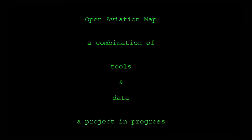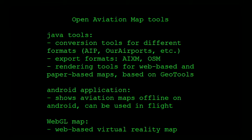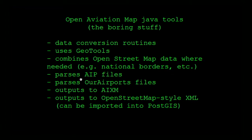So what is this project about? It's a combination of tools and data, and it's a project very much in progress. We have a set of Java tools which are conversion tools from various formats into an OpenStreetMap-style PostGIS database. We can also export to AIXM, which is a new XML format being championed by the FAA and Eurocontrol. Then we have rendering tools which can draw the map. We can also draw paper maps with different projections — not just web-based projection, but also Lambert, Conic, and Mercator projections. We have an Android app so you can use it in flight, and a WebGL-based prototype which is a 3D representation running in a browser.